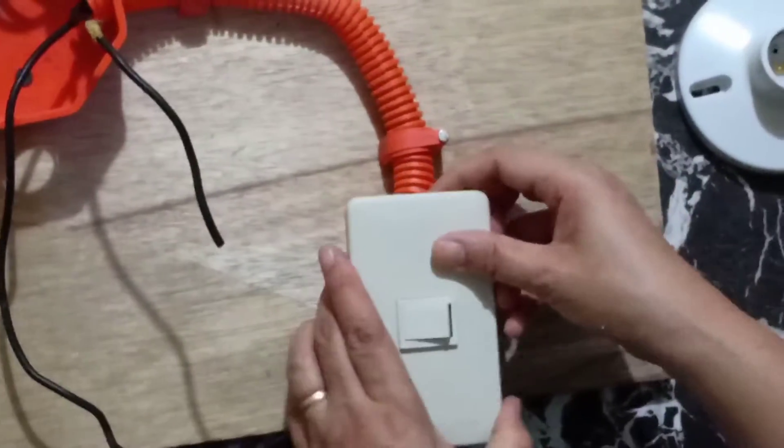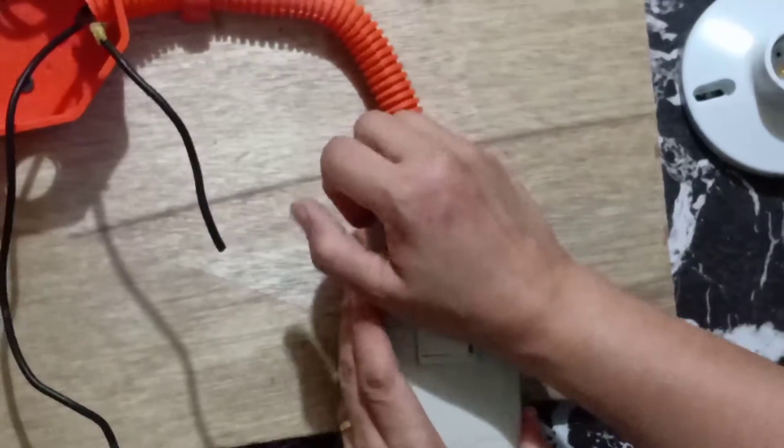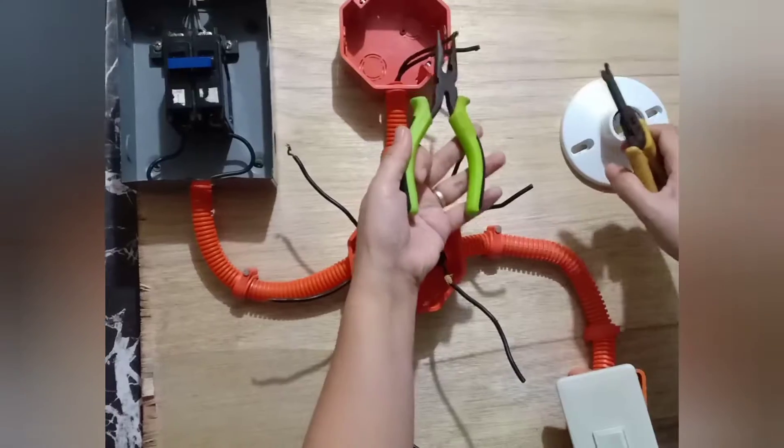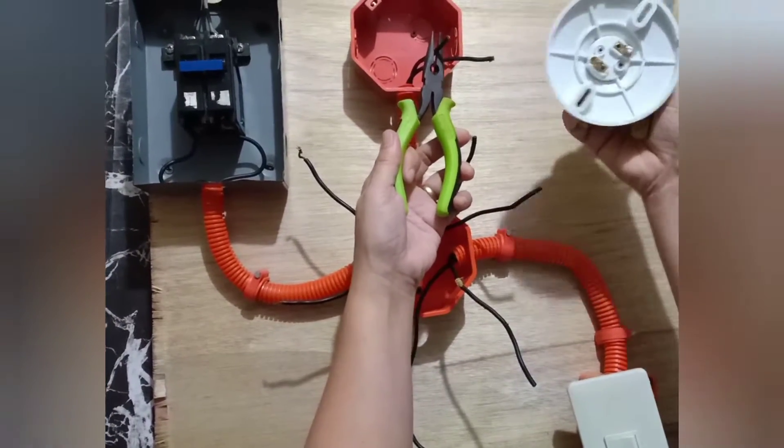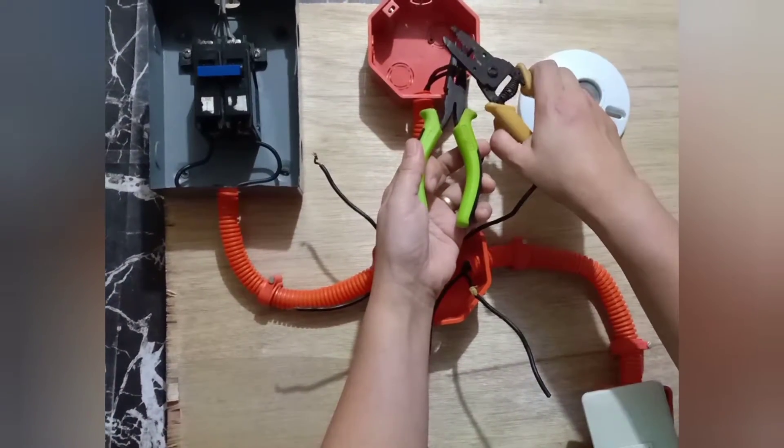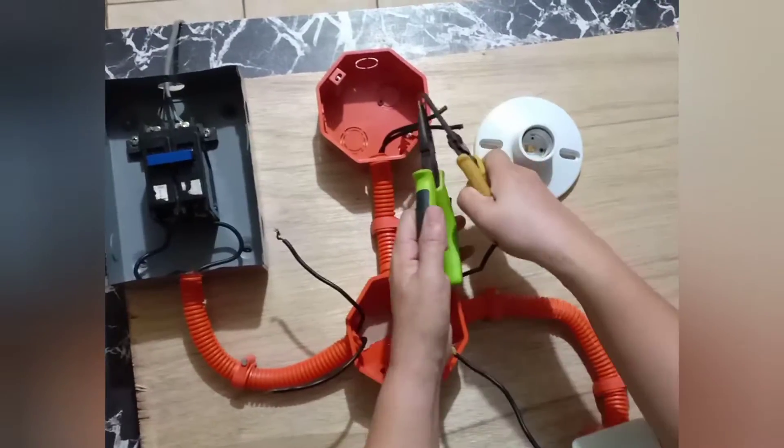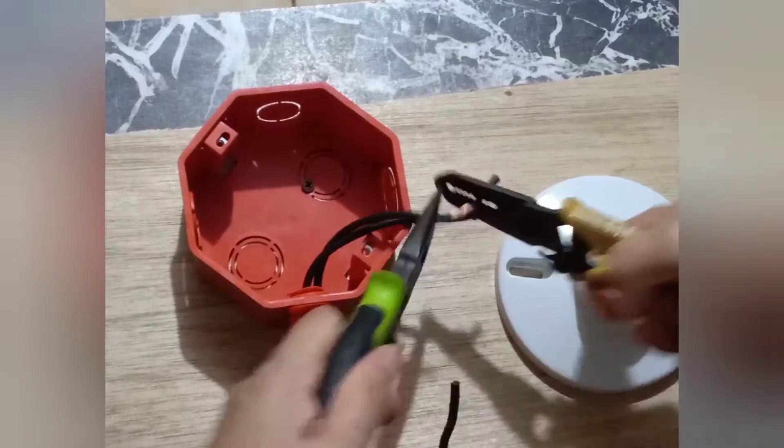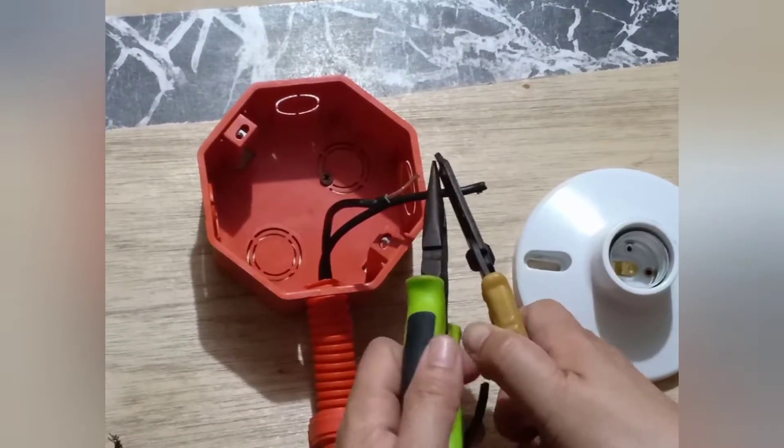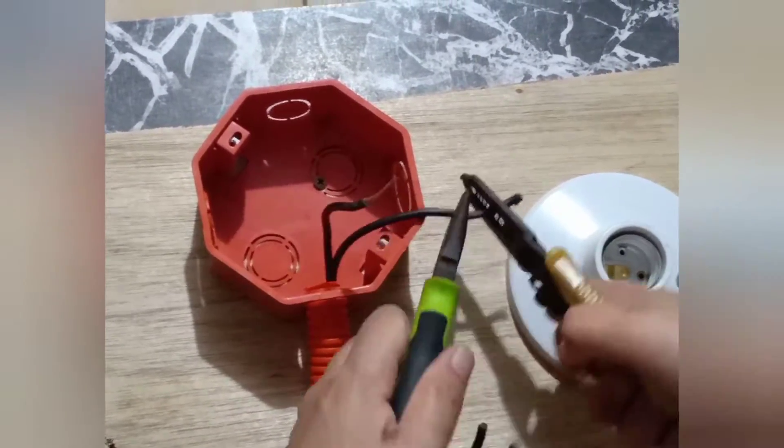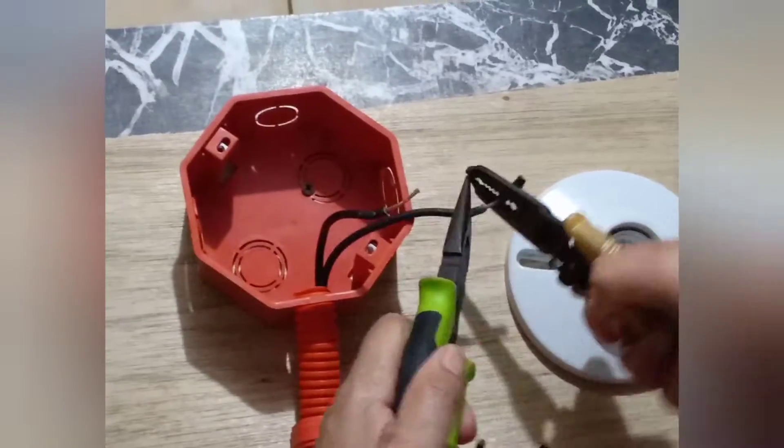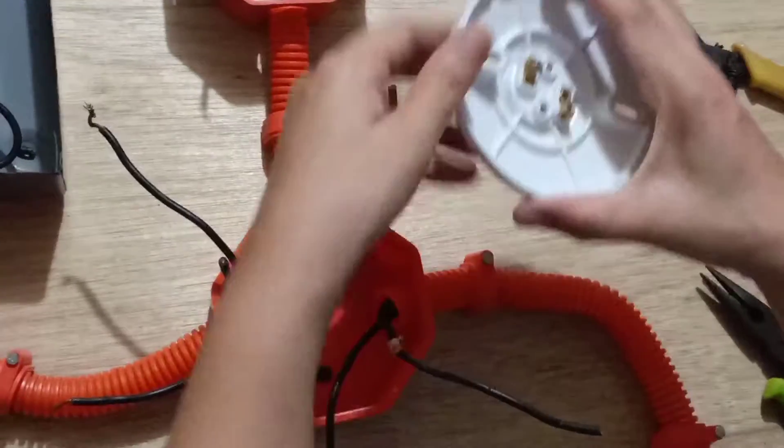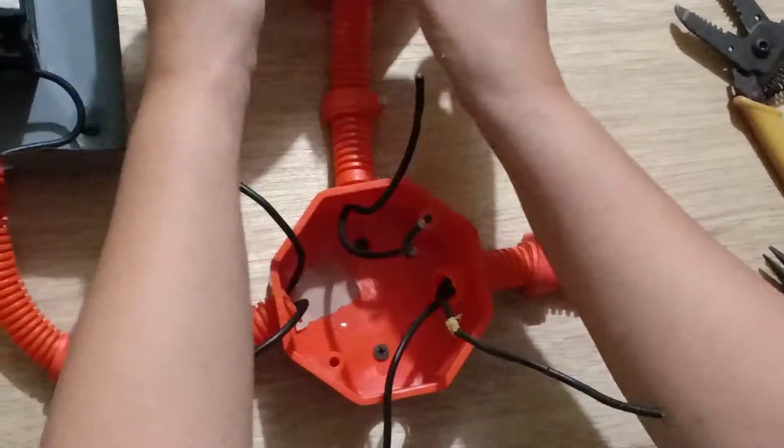Now let us proceed with our lamp receptacle. With our lamp receptacle, so again we have to remove the insulation of the wire. Okay, so the wire should be not too long.